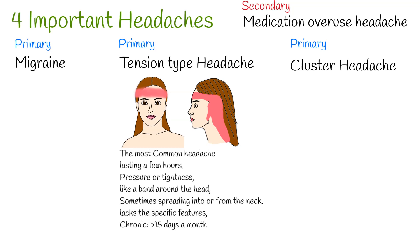Chronic tension-type headache occurs, by definition, on greater than 15 days a month and can be daily and unremitting, affecting 2–3% of adults. Tension-type headache may be stress-related or associated with functional or structural cervical or cranial musculoskeletal abnormality; these etiological factors are not mutually exclusive. Pain medications such as aspirin and ibuprofen are effective for treatment.